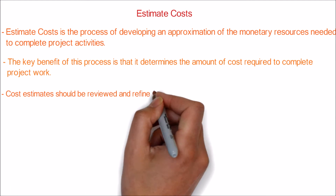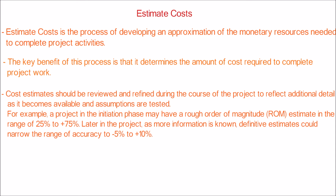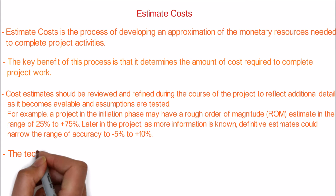Cost estimates should be reviewed and refined during the course of the project to reflect additional detail as it becomes available and assumptions are tested. For example, a project in the initiation phase may have a rough order of magnitude estimate in the range of minus 25% to plus 75%. Later in the project, as more information is known, definitive estimates can narrow the range of accuracy to minus 5% to plus 10%.